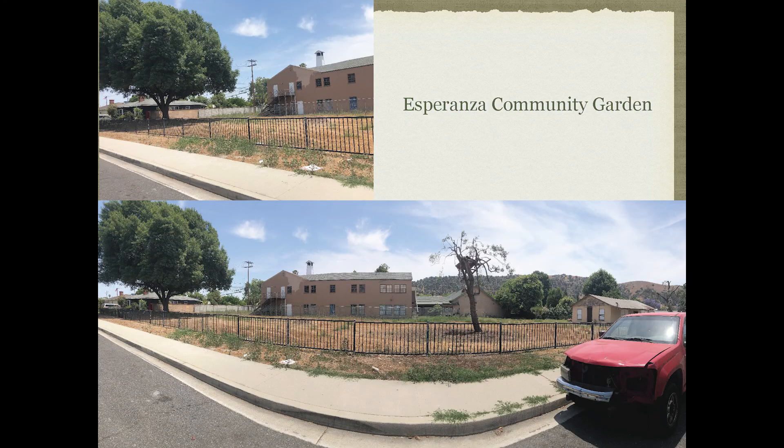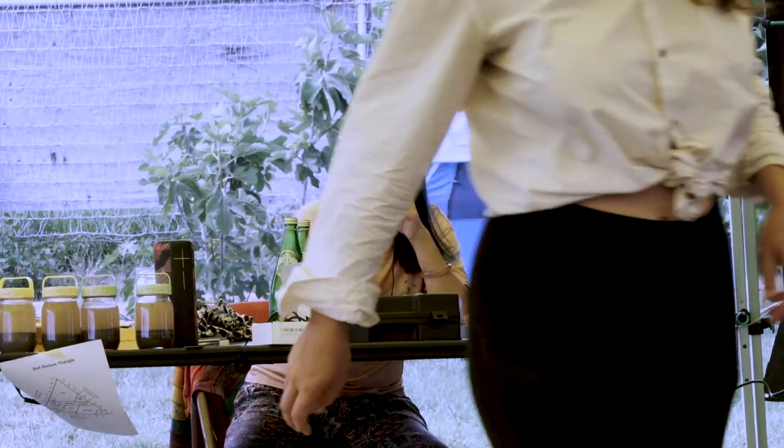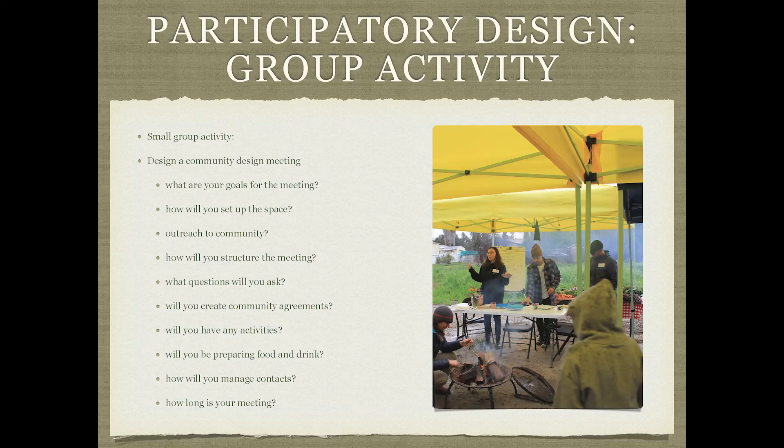We can help bring awareness to the importance of healthy soil and healthy compost in healthy food production by showing the connection. Here are some more photos of the site — from the street there's a big tree, and this is the long strip on the back of the church. For our next section, we're going to start our group project. Get into groups of around six and we'll start our community-led design by planning your community design meeting.